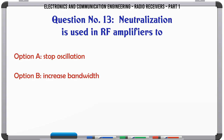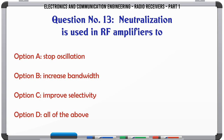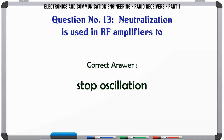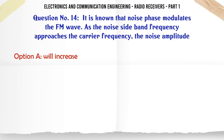Neutralization is used in RF amplifiers to: a. Stop oscillation. b. Increase bandwidth. c. Improve selectivity. d. All of the above. The correct answer is stop oscillation.